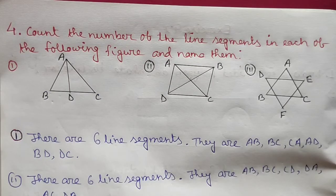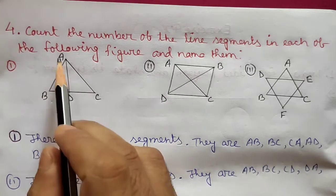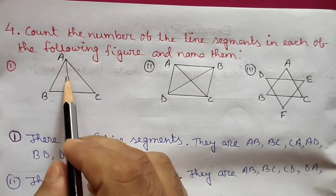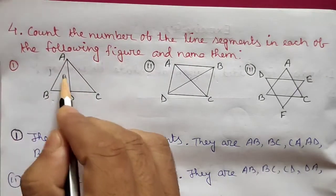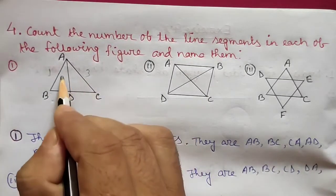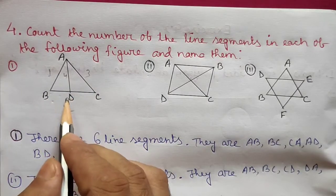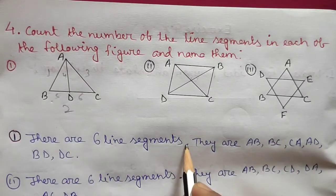The fourth question: count the number of line segments in each of the following figures. In the first figure with points A, B, C, D — the line segments are: AB one, BC two, three, four, then BD is five, and DC is six. So there are six line segments.